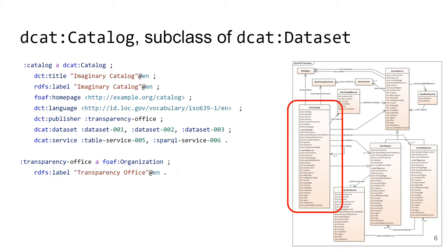Looking at the catalog class: dcat:Catalog is the new class in DCAT, but most properties are already known. There is a title, optionally an rdfs:label, and a homepage — the website giving people access to the data catalog. There is language, publisher, a list of datasets in the catalog, and a list of services representing APIs.